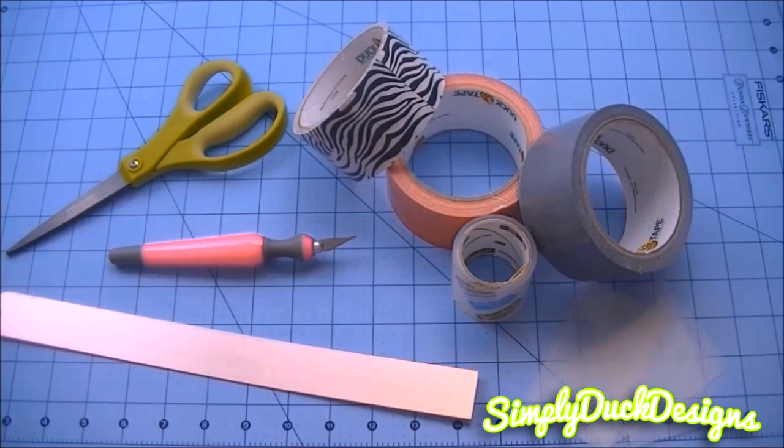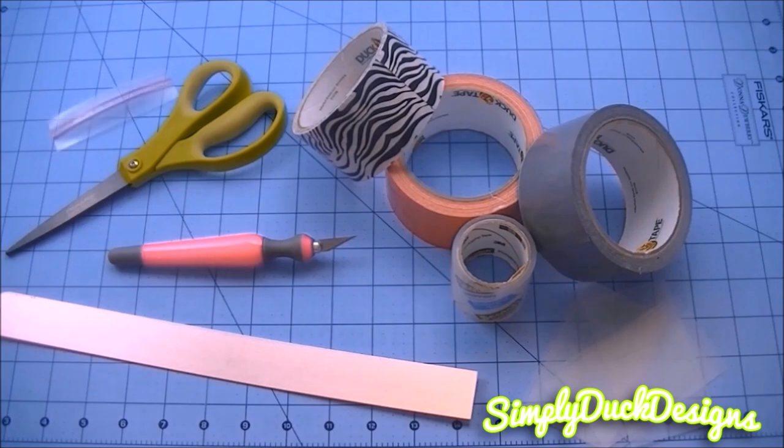Some sort of ID plastic. I usually cut mine 3 3/4 by 2 1/4, but you can cut it to wherever you feel comfortable. That's just what works for me. You'll also need a piece of Ziploc that is about 3 3/4 inches long.